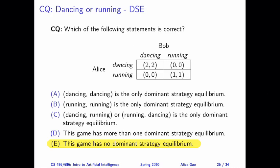So this solution concept does not give us a prediction of how the players would behave in this game. But based on our intuition, there are some clear outcomes that are reasonable, such as both going dancing or both going running. It turns out that we can formalize our intuition using a different concept called the Nash equilibrium.